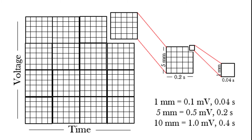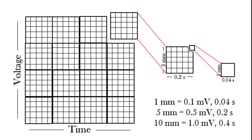Running horizontally across the ECG tracing, we're measuring time in tenths of seconds. Each little box is 0.04 seconds (four one-hundredths of a second). Five little boxes make one big box, which equals 0.20 seconds, and five big boxes equal one full second. Looking vertically, the boxes are one millimeter in measurement, and we describe deflections as a number of millimeters above or below the baseline.